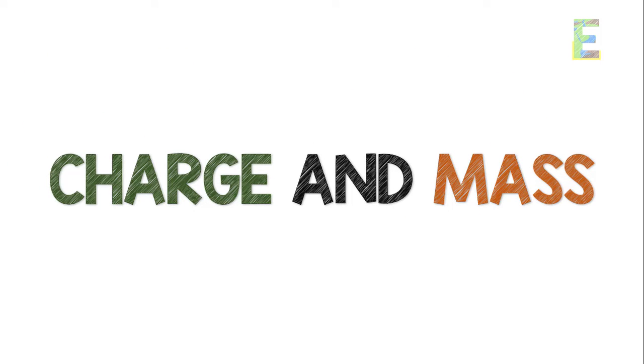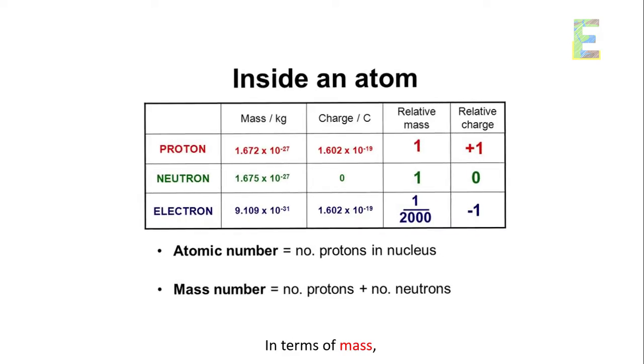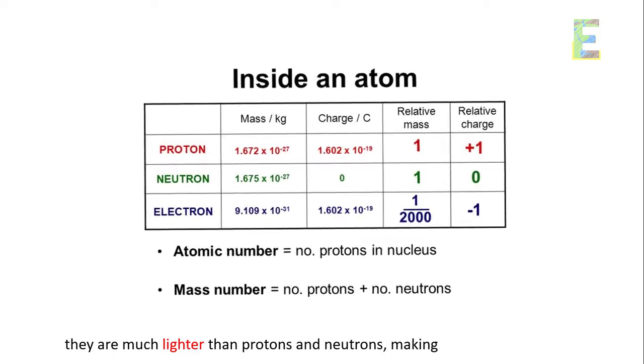Charge and mass. Electrons carry a negative electrical charge, precisely minus one elementary charge. In terms of mass, they are much lighter than protons and neutrons, making them incredibly agile.